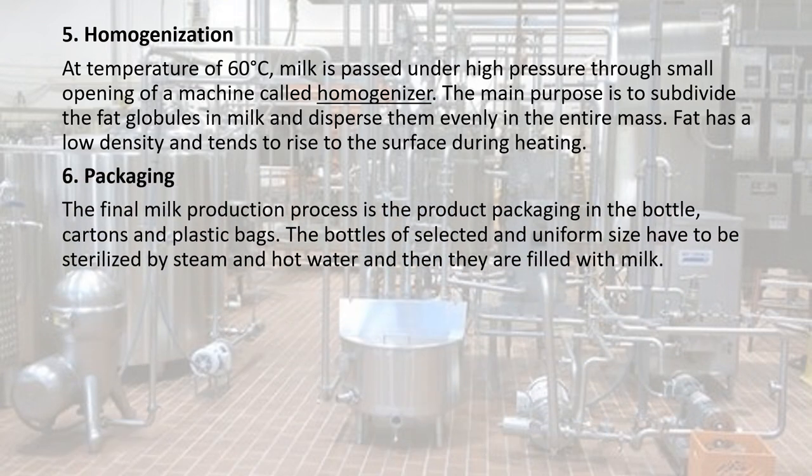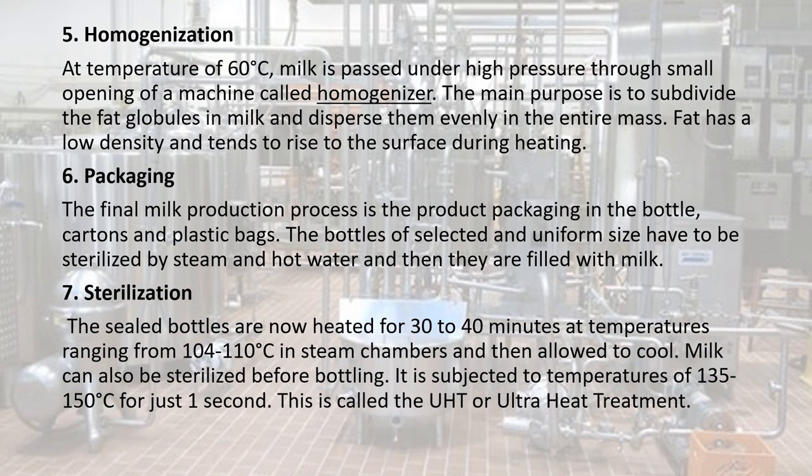Packaging: the final milk production process is product packaging in bottles, cartons and plastic bags. The bottles of selected and uniform size have to be sterilized by steam and hot water and then filled with milk. Sterilization: the sealed bottles are now heated for 30 to 40 minutes at temperatures ranging from 104 to 110 degrees Celsius in steam chambers and then allowed to cool.